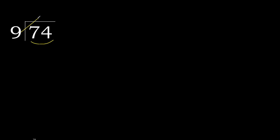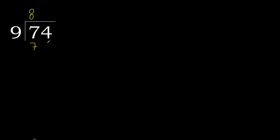9 multiplied by 9 is greater. Multiply by 7: 63. Multiply by 8: 72. 72 is not greater, so subtract.